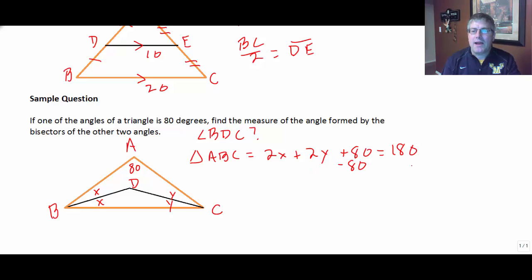Some quick subtraction. We know 2X plus 2Y equals 100. I see that they're all even, so I'm going to divide by 2, and I get X plus Y equals 50.